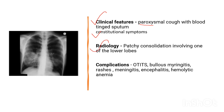Patchy consolidation is specific to the lower lobe, spreading in a fanning fashion. Complications include meningitis, otitis media, and encephalitis, as well as hemolytic effects.